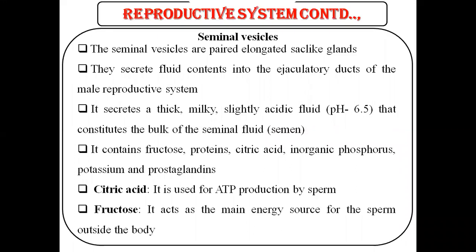Seminal vesicles secrete a thick, milky, slightly acidic fluid with a pH of 6.5. This constitutes the bulk of the seminal fluid, which is called semen.